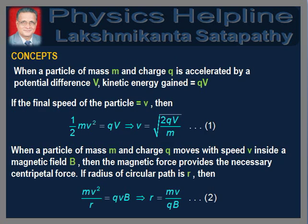Before proceeding to solve the problem, let us recall the related concepts. When a particle of mass m and charge q is accelerated by a potential difference of V volts, the kinetic energy gained by it is qV. If the final speed of the particle is equal to v, then ½mv² = qV, which gives v = √(2qV/m).